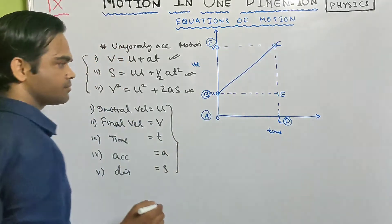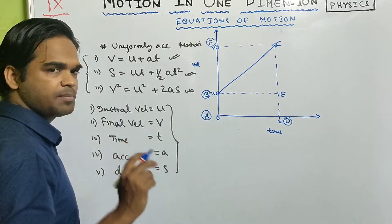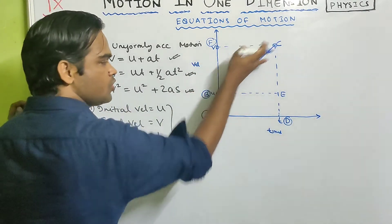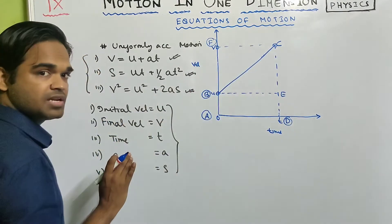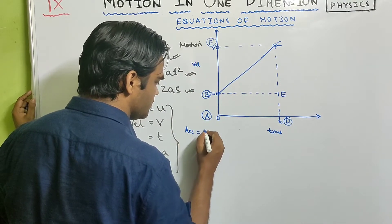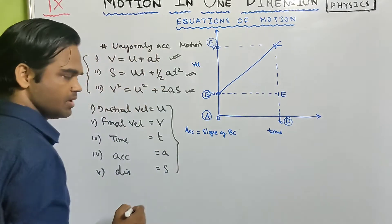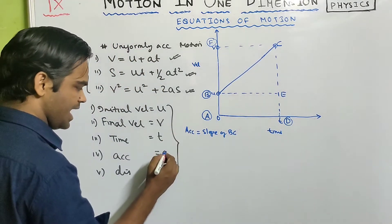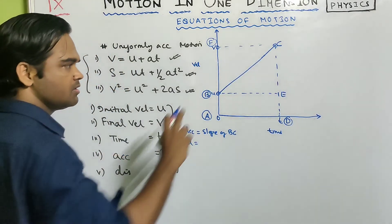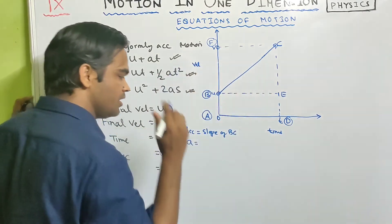Now look carefully at the velocity-time graph. We get acceleration by finding the slope of the line BC. So acceleration equals the slope of BC, which means change in y coordinate divided by change in x coordinate.